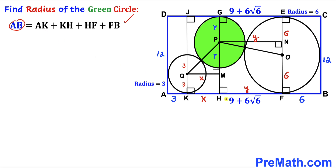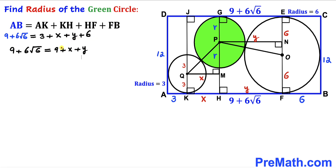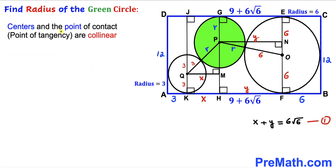Side AB has been given as 9 plus 6 times the square root of 6. Substituting, AK is 3, KH is x, HF is y, and FB is 6. Combining like terms, the 9 and 9 cancel, leaving x plus y equals 6 times the square root of 6. This is Equation 1.